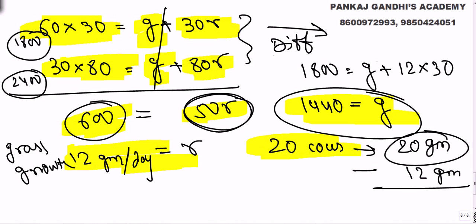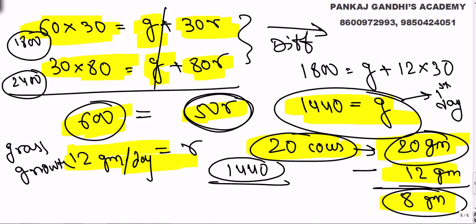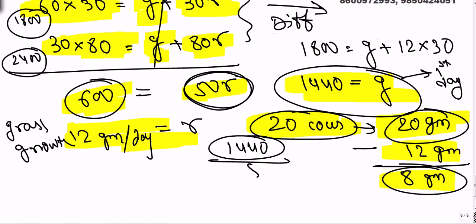Per day, 20 grams are needed but only 12 grams grow, so 8 grams net are consumed from the stored grass each day. This is just like a bank balance — 8 grams are reduced from the 1440 grams every day. So in 1440 ÷ 8 = 180 days, the 20 cows will finish the whole grass.